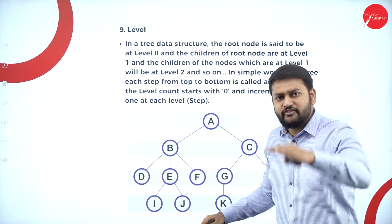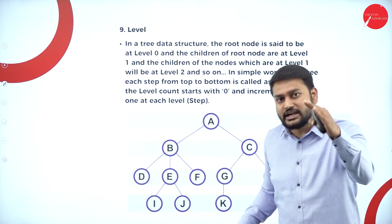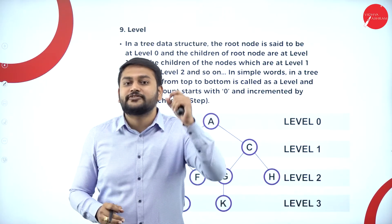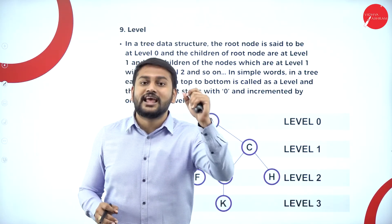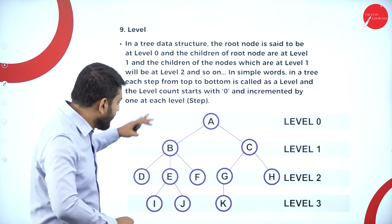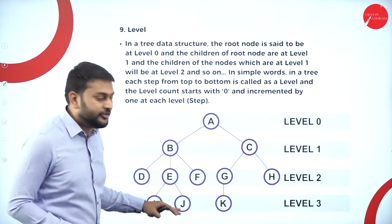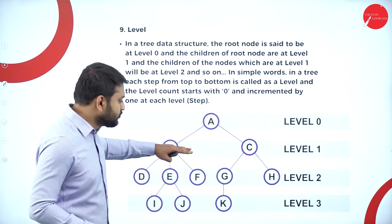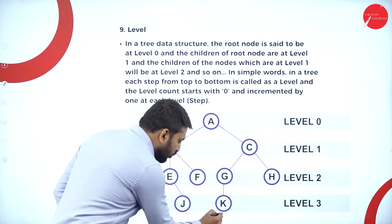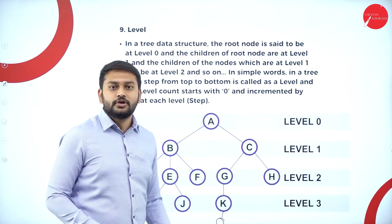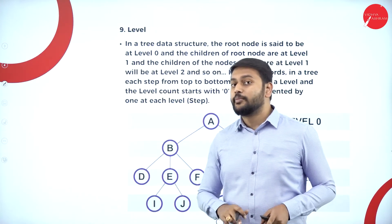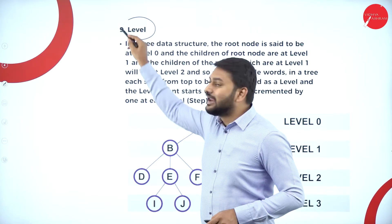Moving forward to levels. Each and every step in the tree is what I treat as a level, and remember — levels always start from zero. So the first node is at level zero, the next step is level one, then level two, level three, and so on. Each step is treated as a different level.